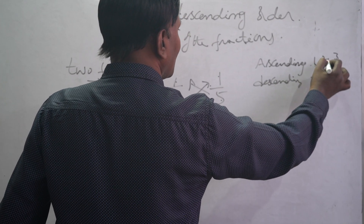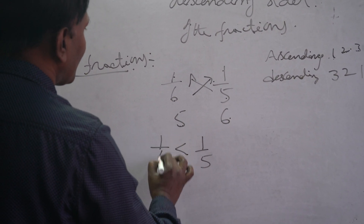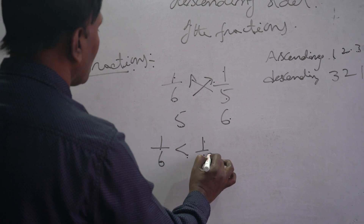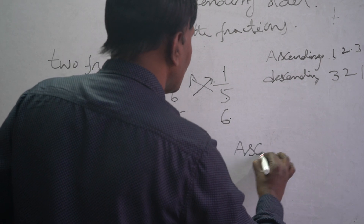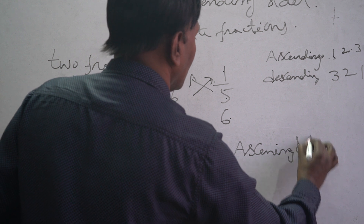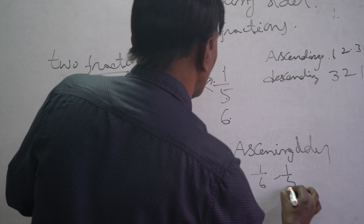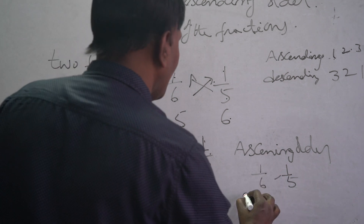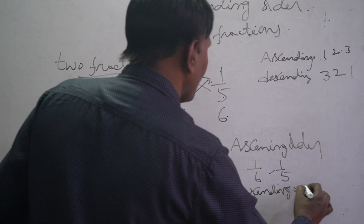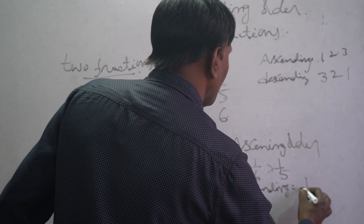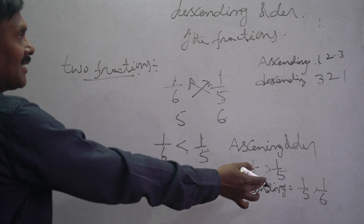So 1/6 is less than 1/5. The ascending order is: 1/6, 1/5 — from least to highest value. The descending order is: 1/5, 1/6.